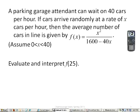Now here's another application dealing with wait time. A parking garage attendant can wait on 40 cars per hour. If cars arrive randomly at a rate of x cars per hour, then the average number of cars that are waiting in line is given by this function: x squared over 1600 minus 40x. Now here, this function is only going to be valid for a domain of between 0 and 40 cars per hour. Otherwise, we'd be getting values that won't make sense.